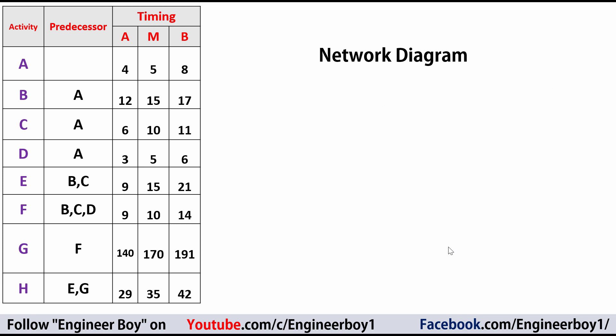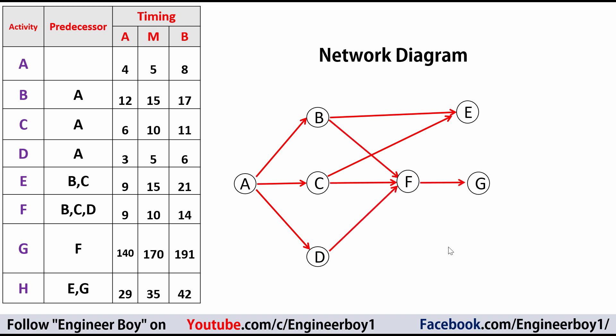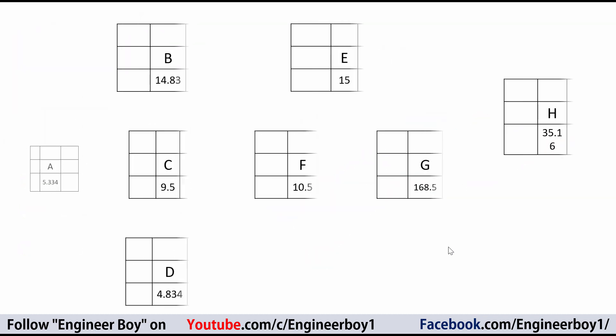Next, we draw the network diagram. A separate video for this approach has already been uploaded in the same playlist. Activity A is the project start and is the predecessor for B, C, and D. Once A completes, B, C, and D start. Then B and C are predecessors for E, and B, C, and D are predecessors for F, which leads to the final activity.